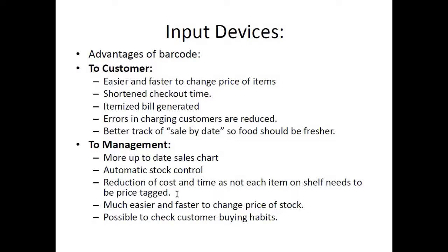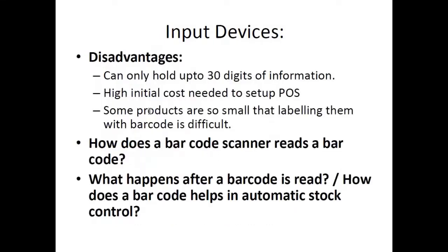It is much easier and faster to change the price of stock items, as you do not need to label each item individually — you simply log into the database and edit the price column, and the updated price is instantly applied to the whole stock. It is also possible to check customer buying habits. Disadvantages: can only hold up to 30 digits of information, high initial cost to set up a POS (Point of Sale) system, and some products are so small that labeling them with a barcode is difficult, for example rings, earrings, or small jewelry items.